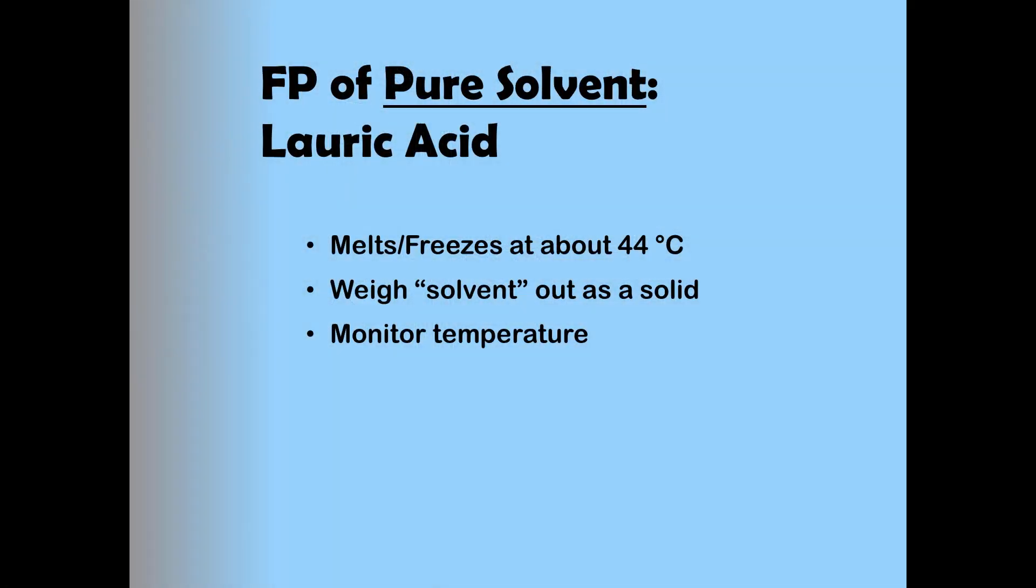Our pure solvent today is lauric acid, which is especially useful because it freezes at around 44 degrees Celsius or about 110 degrees Fahrenheit. This means that we won't need any ice to freeze the solvent. Instead, we'll actually heat up the lauric acid solid, causing it to melt and become our liquid solvent. And then we'll simply let it cool in air and monitor its temp as it freezes.